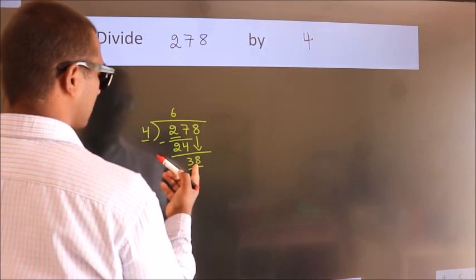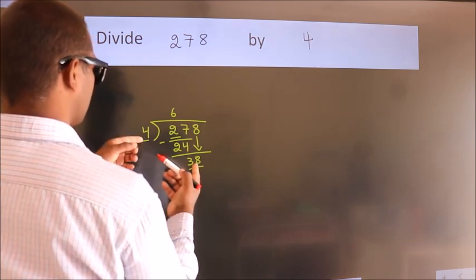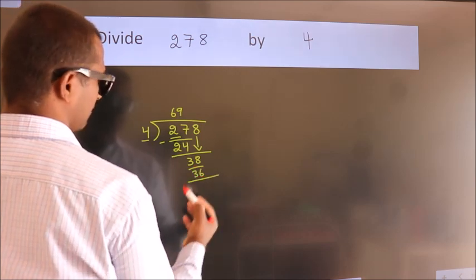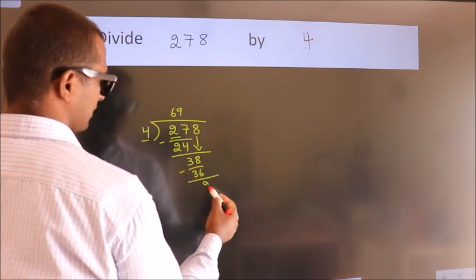A number close to 38 in the 4 table is 4 nines is 36. Now we subtract. We get 2.